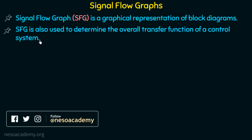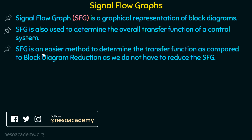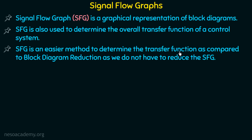Like block diagram reduction technique, we will use signal flow graph to determine the overall transfer function of a control system. SFG is an easier method to determine the overall transfer function as compared to block diagram reduction, as we do not have to reduce the SFG. In block diagram reduction, we need to reduce complex multiple subsystems into a single block. But in SFG, we have a predetermined formula we can apply to directly calculate the transfer function.